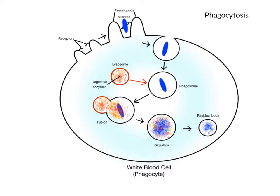Next, the cell's digestive organelles, the lysosomes, fuse with the phagosome and release their digestive enzymes. These enzymes surround the bacterium and begin to chemically digest it, breaking it down into small chemical building blocks, wastes, and nutrients. The white blood cell can digest the nutrients, but any indigestible materials are stored in a vesicle called a residual body, or are exported out of the cell through exocytosis.